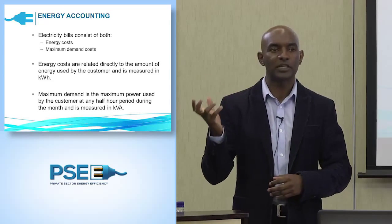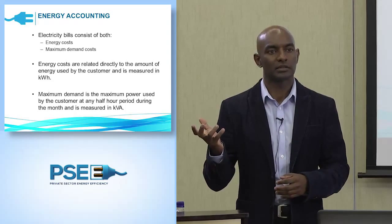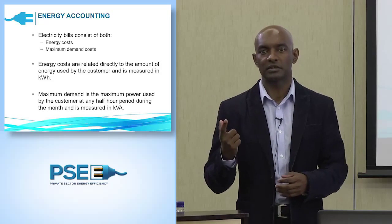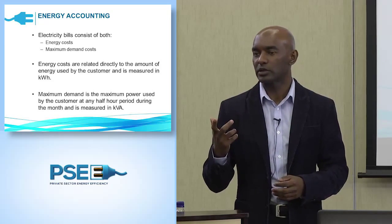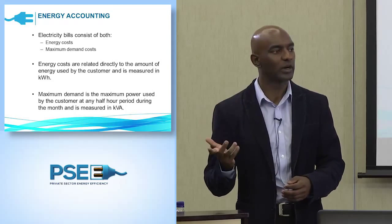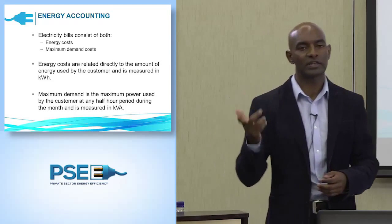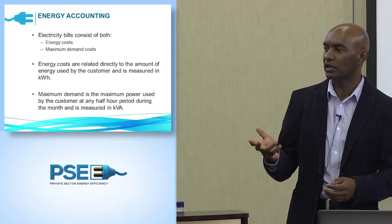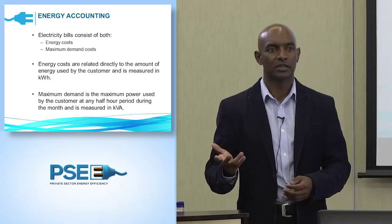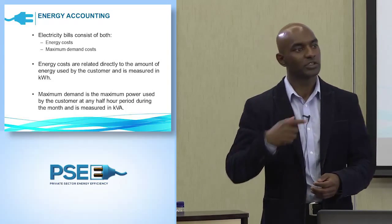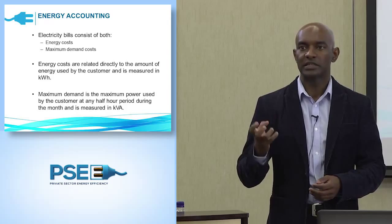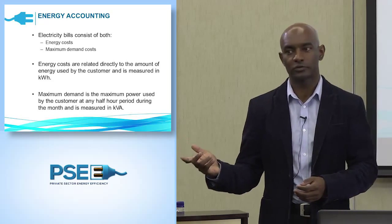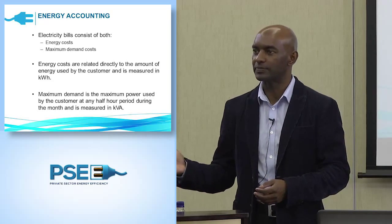For example, every time I switch on a light, the longer the light is on, the more the meter is turning. That's the kilowatt hours. Because for that meter to turn, Eskom has to burn coal. The longer I leave the light on — say for 10 hours — Eskom is burning coal for 10 hours, so my energy consumption is higher. If I leave the light on for only two hours, they only burn coal for two hours.